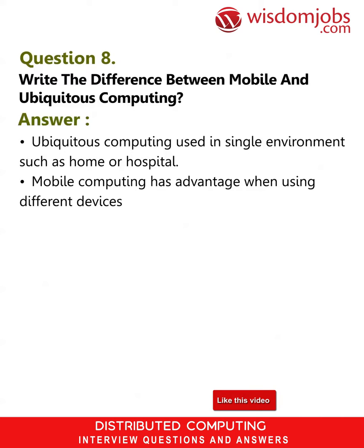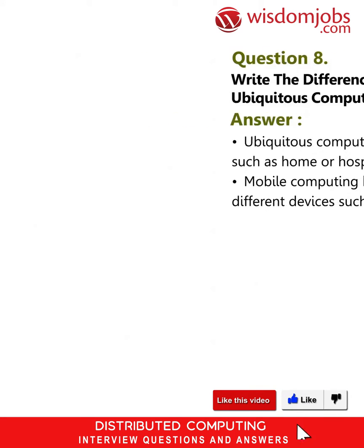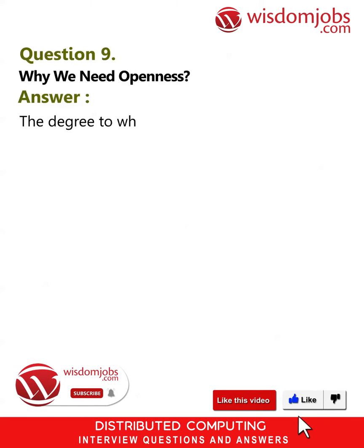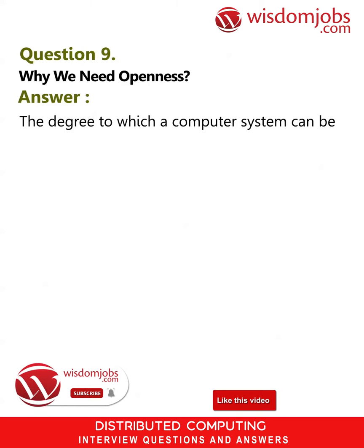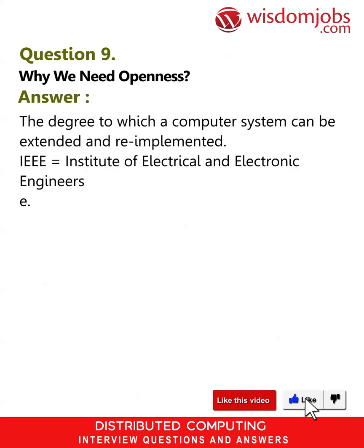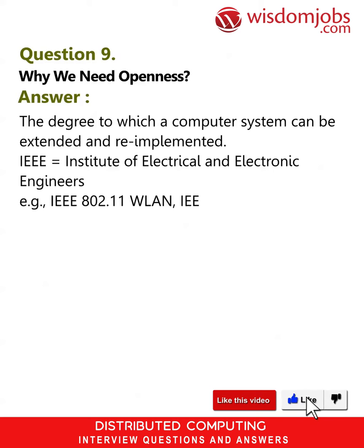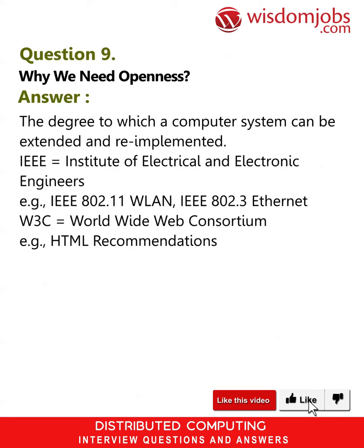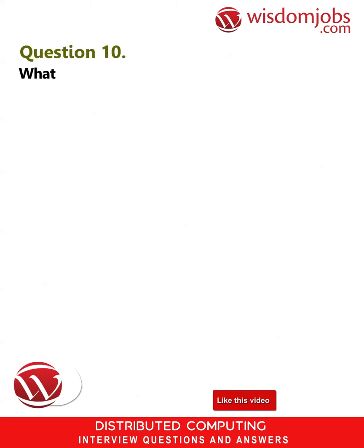Question 9: Why do we need openness? Answer: The degree to which a computer system can be extended and re-implemented. IEEE equals Institute of Electrical and Electronic Engineers — for example, IEEE 802.11 WRAN, IEEE 802.3 Ethernet. W3C equals World Wide Web Consortium — for example, HTML recommendations.